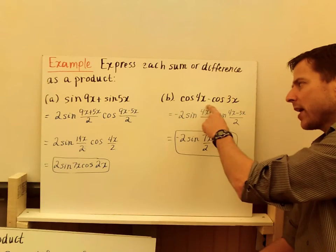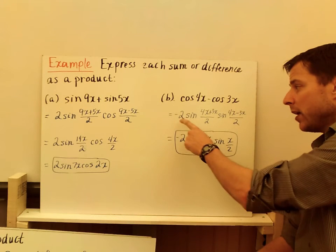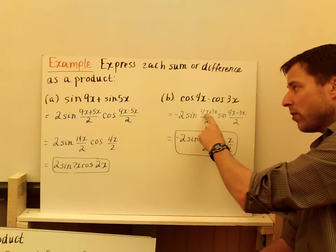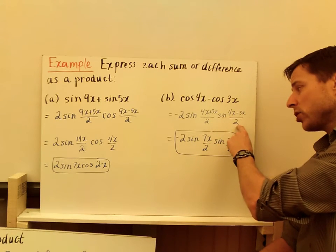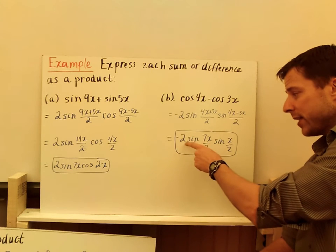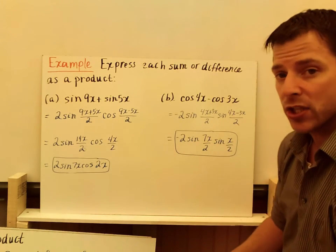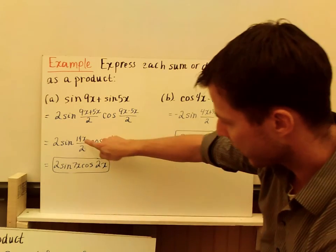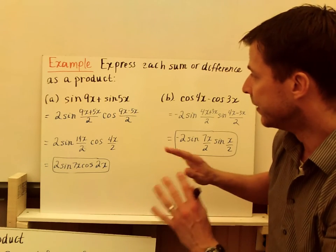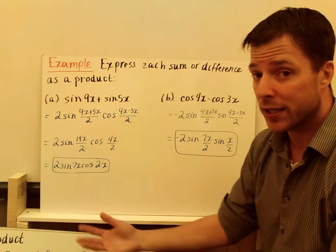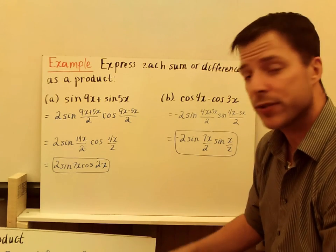In part B, cosine of 4x minus cosine of 3x. That's not just cosine of x - be careful. I get negative 2 sine of 4x plus the 3x over 2 times sine of 4x minus 3x over 2. When I simplify this, I get negative 2 sine of 7x over 2 times sine x over 2. There's no simplification like we had here to divide out. These don't go in evenly, so you leave them as fractions. So that's product to sum and sum to product. Not much to that rule. If you guys have any questions or comments, let me know. We'll see you next time.